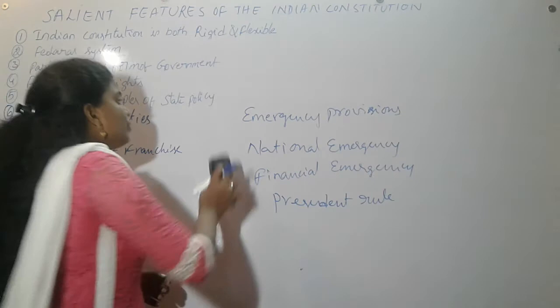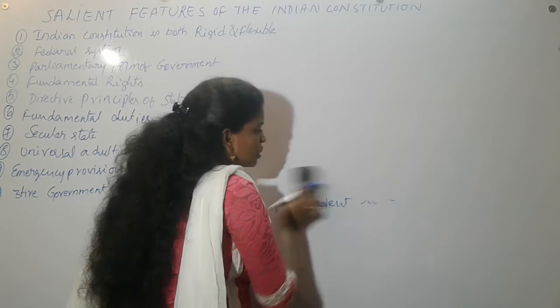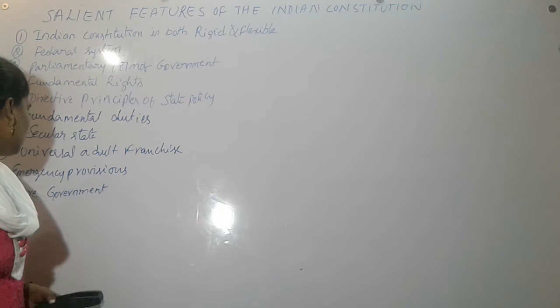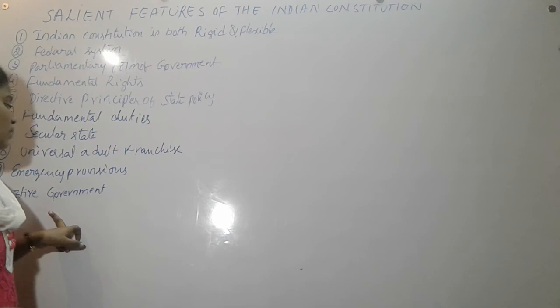The last feature is the three-tier government system. After the 73rd and 74th Constitutional Amendment Acts, Panchayats and Municipalities also became constitutional bodies, making it a three-tier government system.